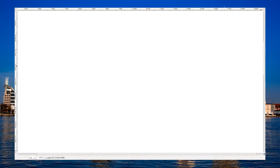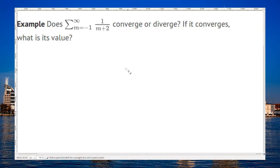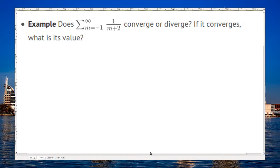Another technique we can use is something called re-indexing. So, here we have this series, and it starts at a very odd index there. I'd like to change it so it's something more familiar to me. I think I could do that. So, one way I could do this, actually, is just to write out a few terms of the series.